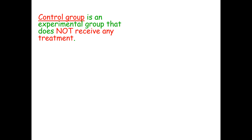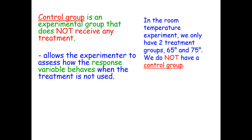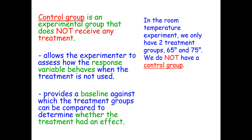A control group is an experimental group that does not receive any treatment. In the room temperature experiment, we only have two temperature treatments — 65 degrees and 75 degrees — so we do not have a control group. A control group allows the experimenter to assess how the response variable behaves when the treatment is not used, providing a baseline against which treatment groups can be compared.